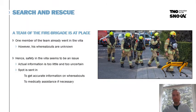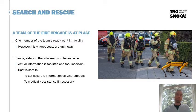The fire brigade is already at place and one fireman already went into the villa. However, his whereabouts are unknown, and for that reason the commander is reluctant to send in another fireman. Instead, he sends in Spot, which is a quadruped robot. The idea is for Spot to acquire more information about the villa and what the next fireman can expect inside.